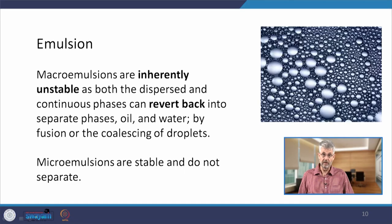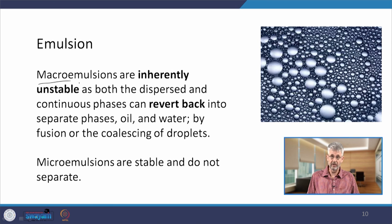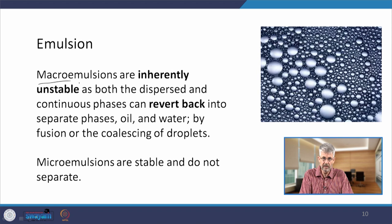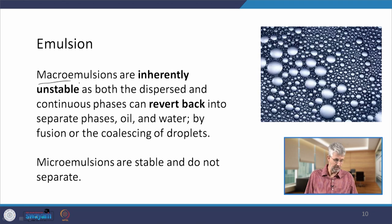Macro emulsions, the ones with relatively larger droplets, are inherently unstable. After a certain time, the droplets will coalesce and form larger and larger droplets, eventually leading to phase separation — the oil separates from the water. Micro emulsions, on the other hand, are very stable over long periods of time and do not tend to separate. That makes micro emulsions interesting for many purposes, because the last thing you want is a separation of oil and water reverting into something neither appealing nor tasty for consumer products like milk or butter.